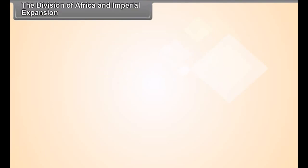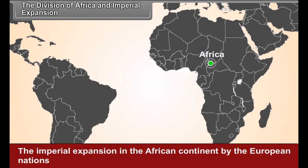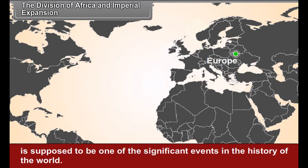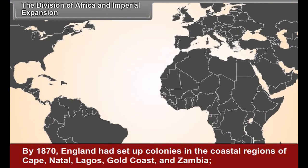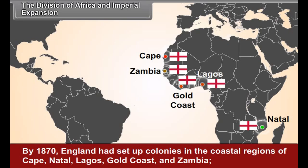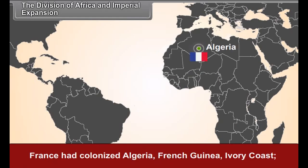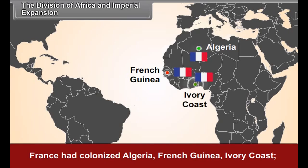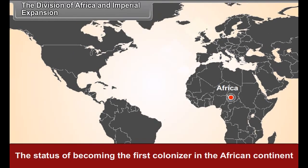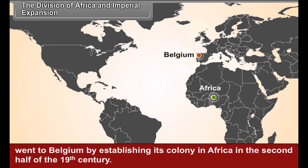The Division of Africa and Imperial Expansion. The imperial expansion in the African continent by the European nations is supposed to be one of the significant events in the history of the world. By 1870, England had set up colonies in the coastal regions of Cape, Natal, Lagos, Gold Coast and Zambia. France had colonized Algeria, French Guinea, and Ivory Coast, whereas Portugal brought under its control Mozambique and Angola. Belgium became the first colonizer in the African continent in the second half of the 19th century.